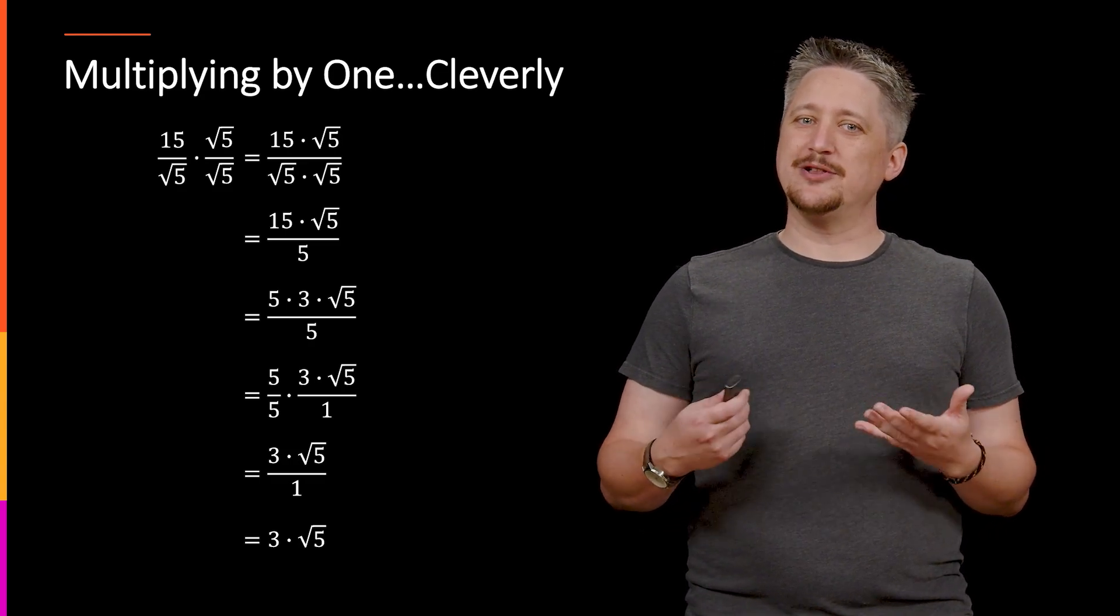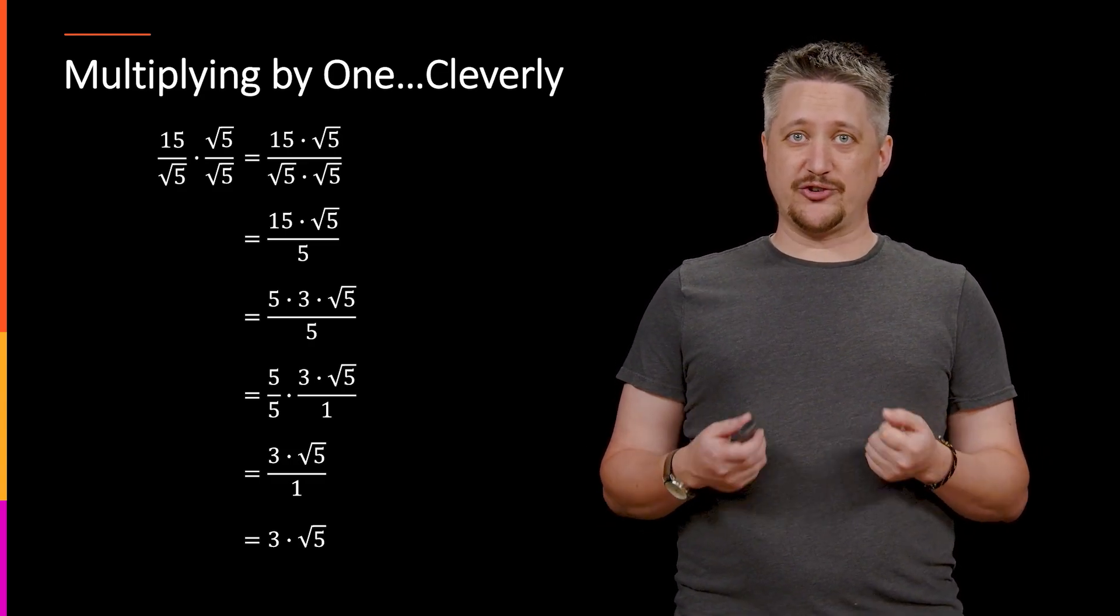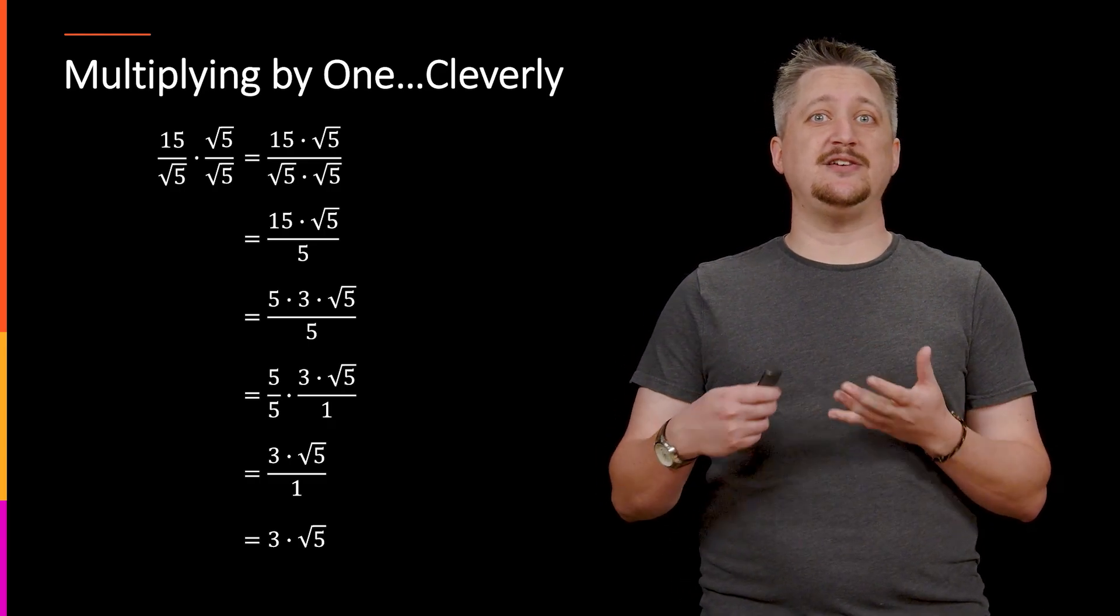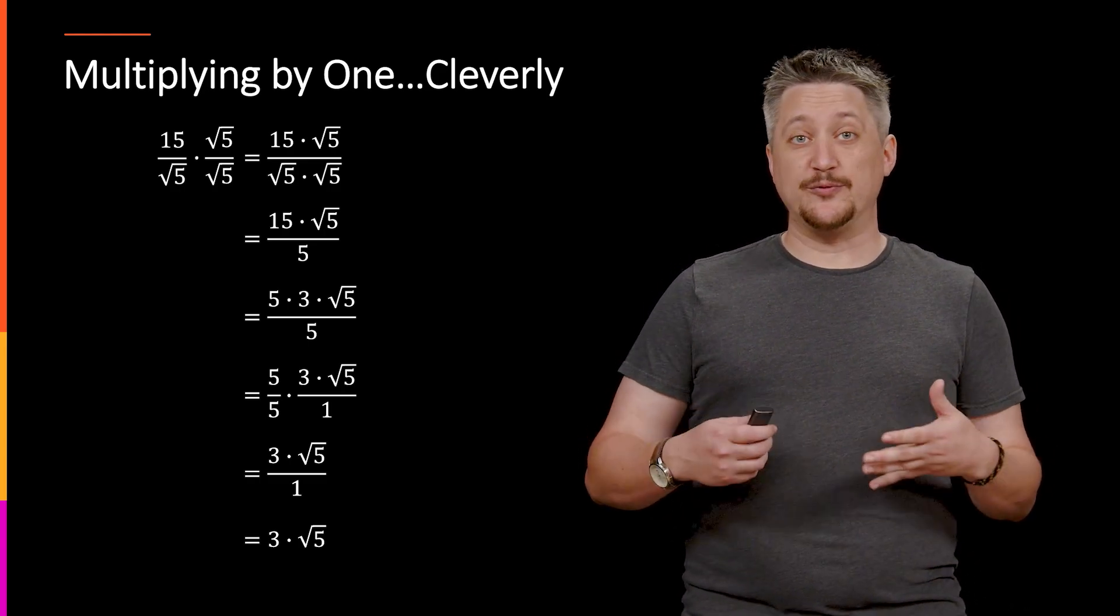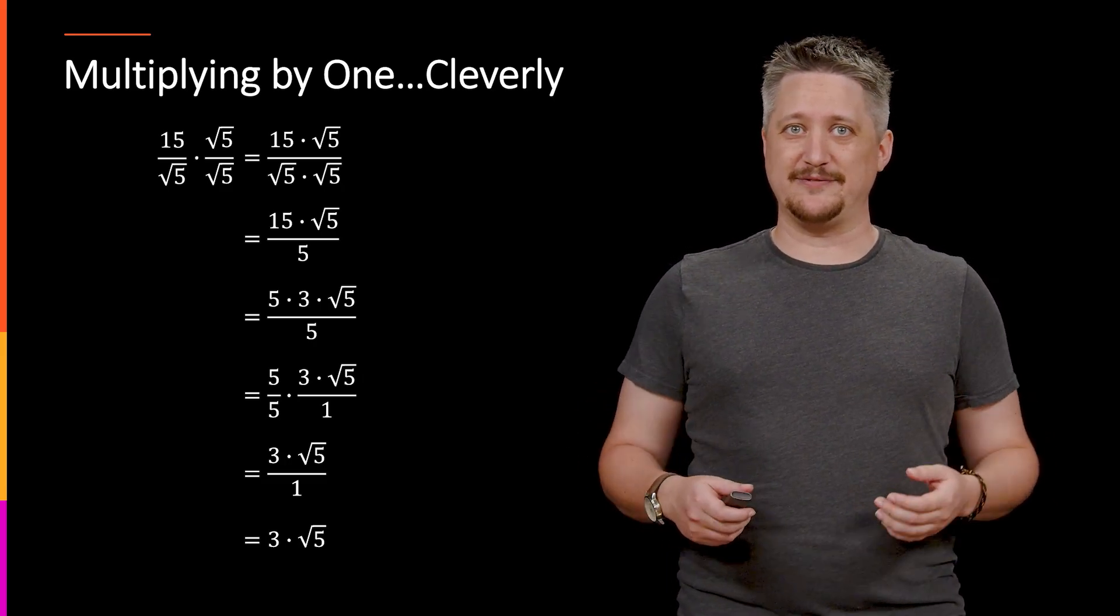So this is an example of that multiplying by 1 cleverly, albeit an intentionally basic example so that you can see what we mean exactly. As we move forward, this kind of thing will show up in progressively more complicated ways. And in fact, this is a theme that happens through literally all of mathematics.